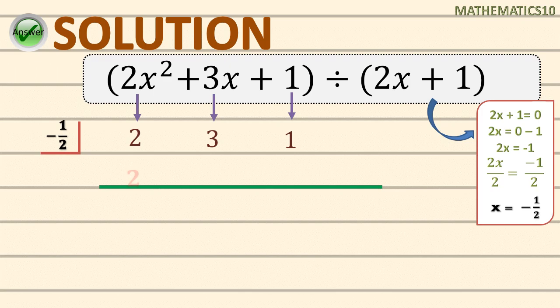Now let's do the operations. First, bring down the leading coefficient, which is 2. Then multiply 2 by negative 1 half: 2 times 1 is 2, divided by 2 is 1, so the result is negative 1. Combine 3 and negative 1: we have positive 2. Then multiply 2 by negative 1 half again: we get negative 1. Combine 1 and negative 1: we have 0. Therefore, our remainder is 0.